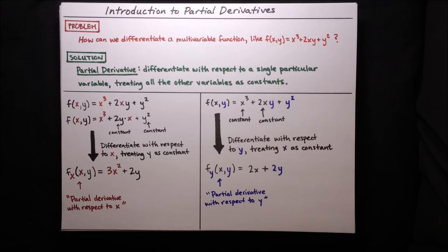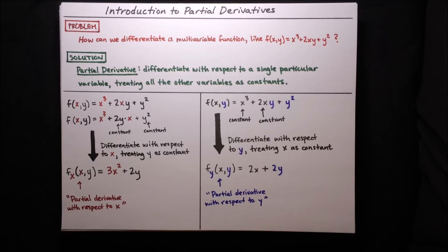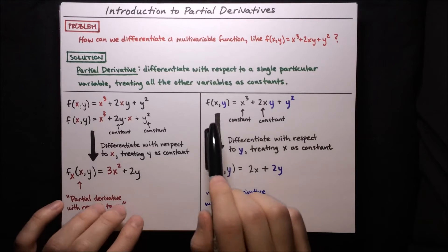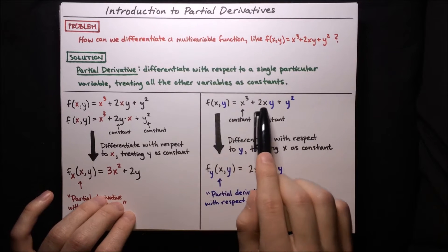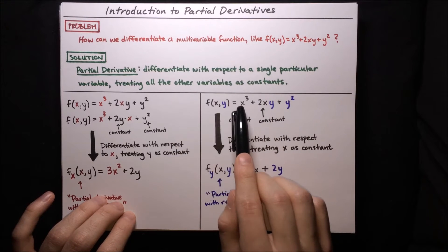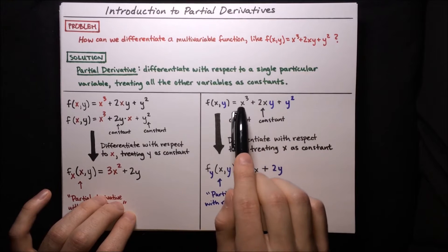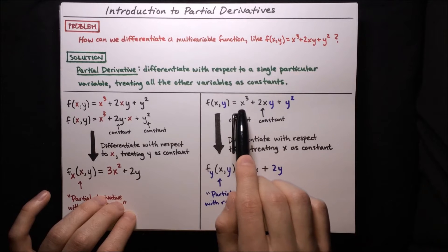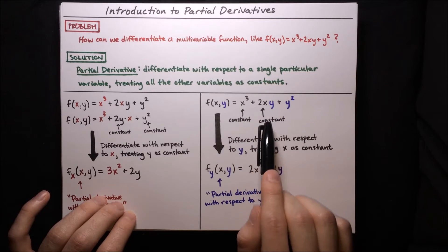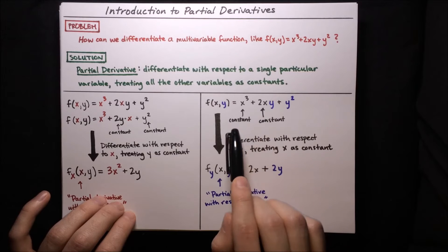This is called the partial derivative because it's only one part of the derivative of f. The other part comes from the partial derivative with respect to the other variable, y. To compute the partial derivative with respect to y, we follow a similar process: we interpret y as our only true variable and x as constant. So we've got x³ + 2xy + y², where x³ is a constant and 2x multiplying y is also treated as a constant.